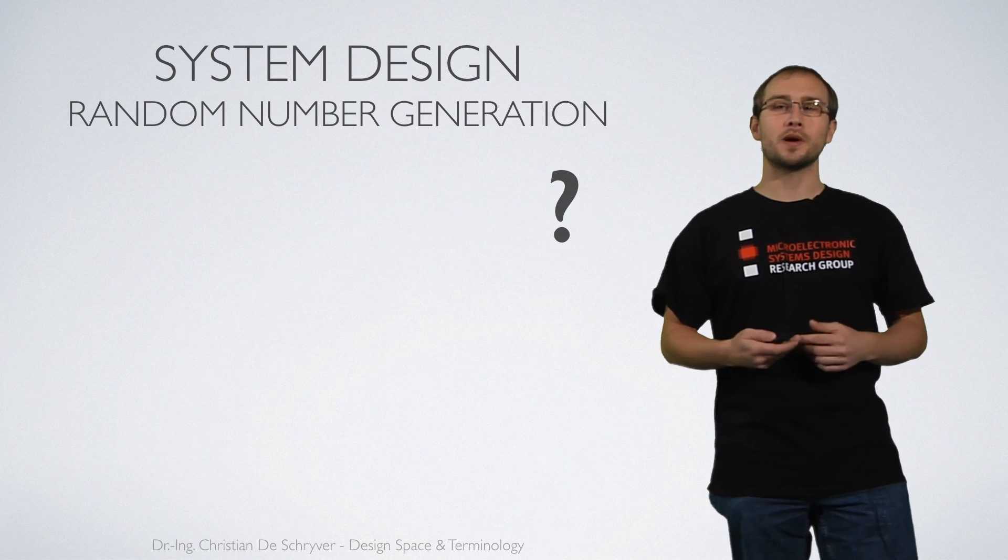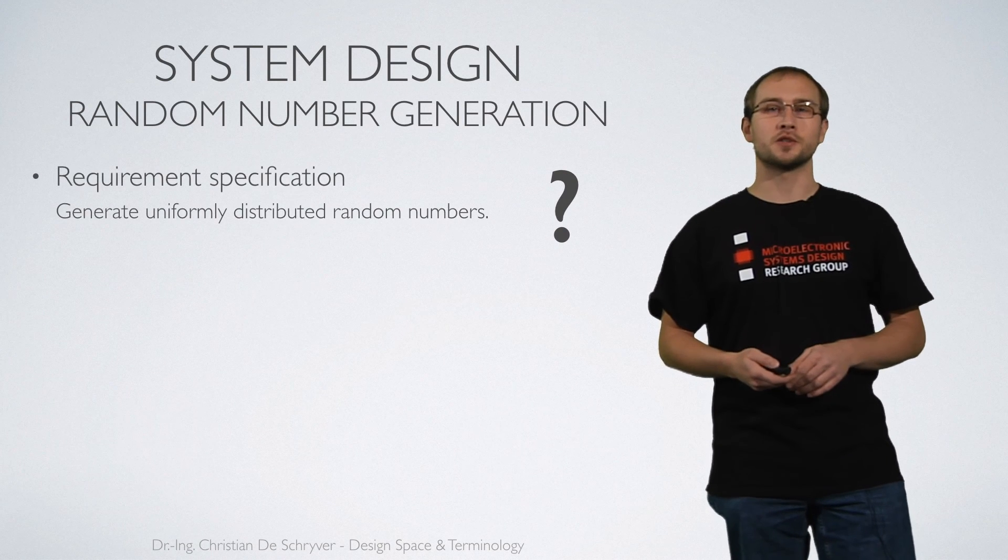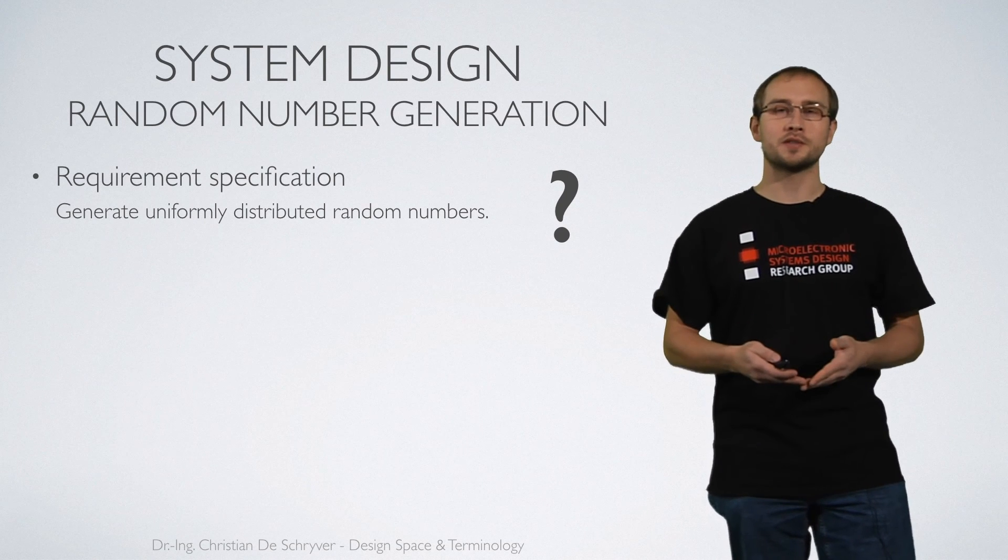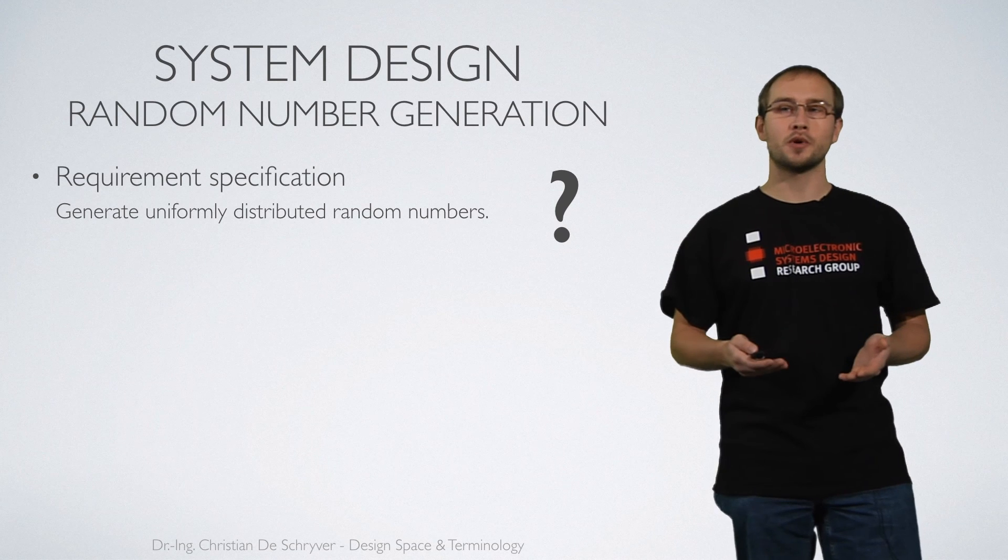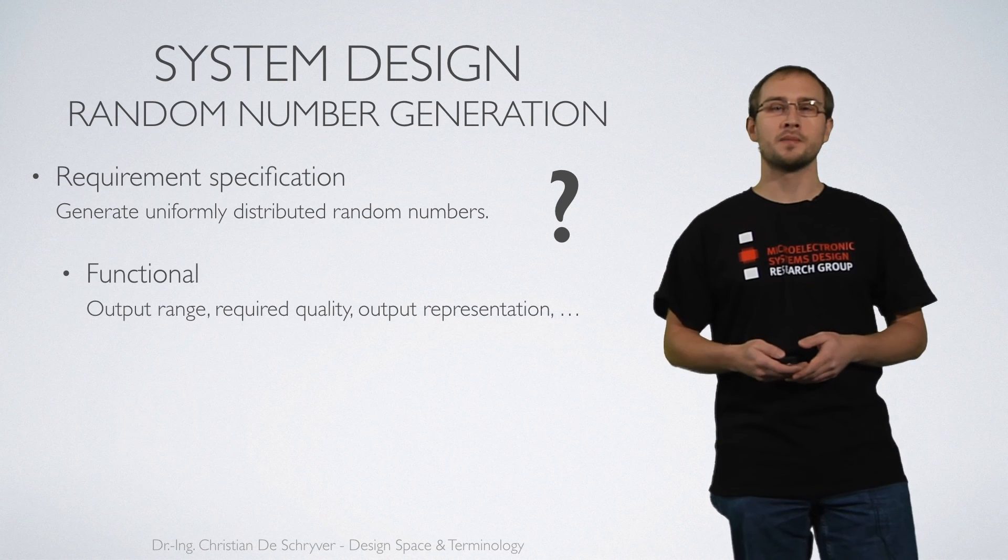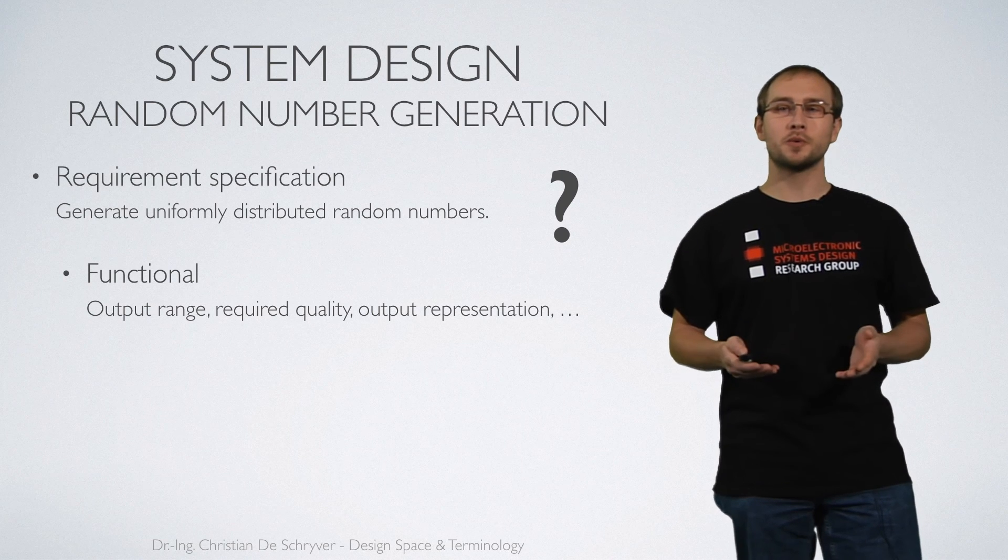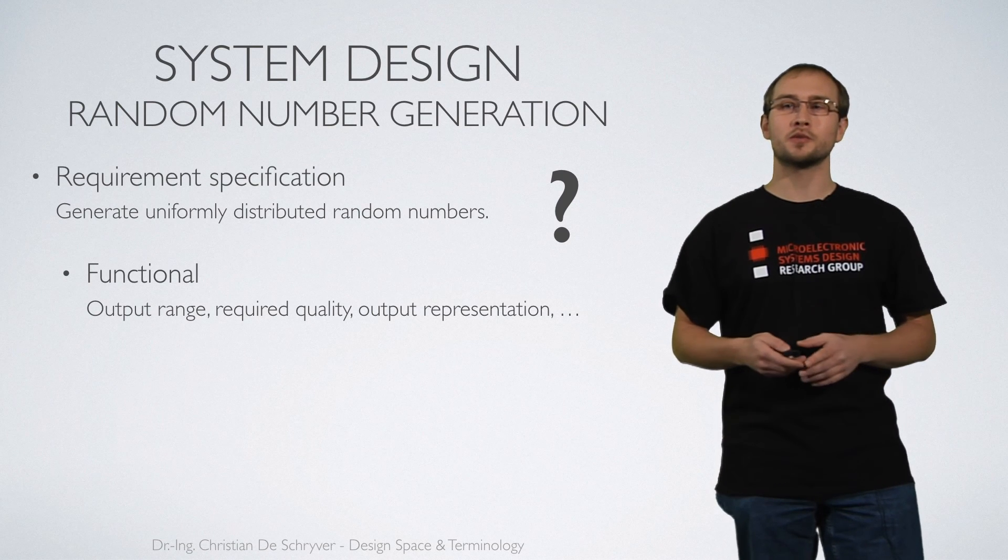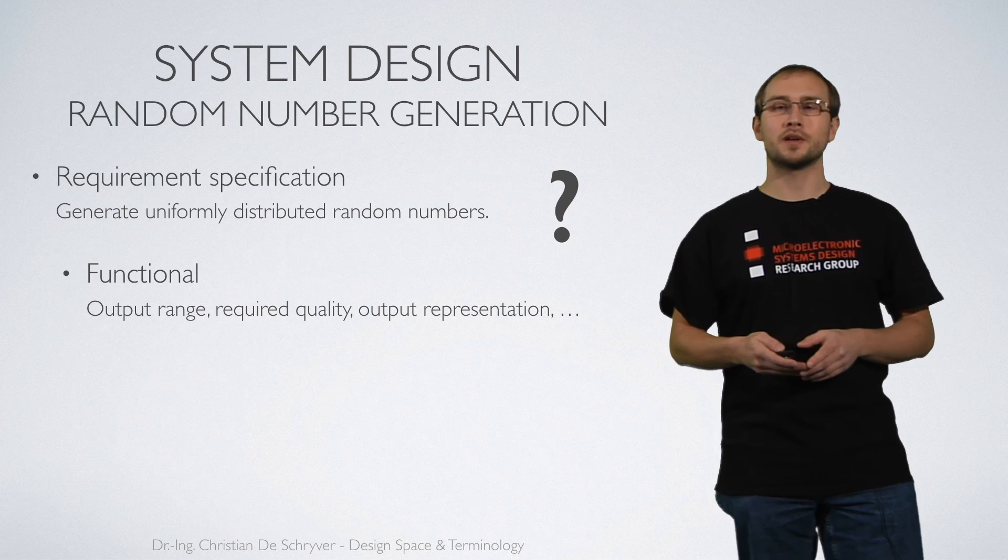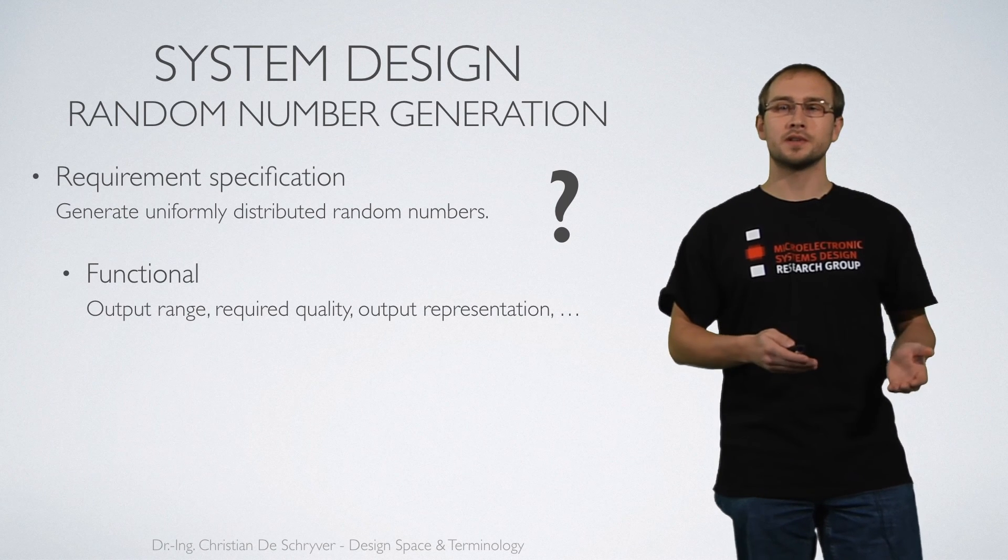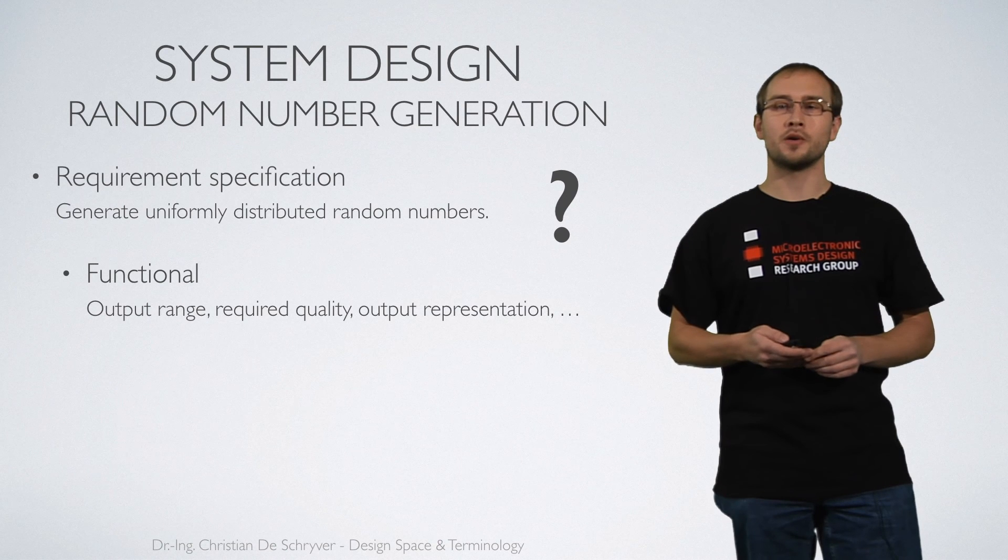This is why we first need the specification. The specification tells us okay in this case we want to have a specific distribution, a uniform distribution of the random numbers. Other functional specifications are for example the output range, the representation of the numbers, the required quality. These are all things that influence directly the behavior of the system itself.